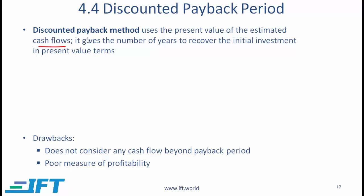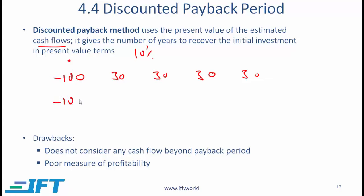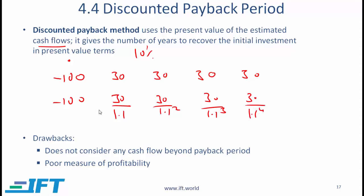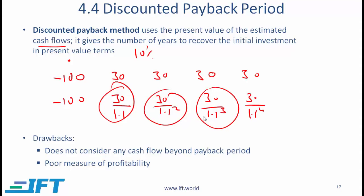To come up with the discounted payback period, we need the discount rate — let's say that's 10%. Going back to the same example where the initial investment is 100 and then 30, 30, 30, and 30, rather than simply using these numbers, we have to use the present value equivalents. The present value of minus 100 at time 0 is minus 100. The present value of the first 30 would be 30 divided by 1.1, then 30 over 1.1 squared, 30 over 1.1 cubed, and 30 over 1.1 to the power of 4. We use these numbers and will practice a question on the next slide.